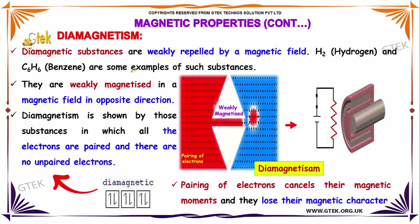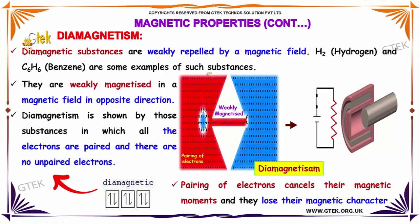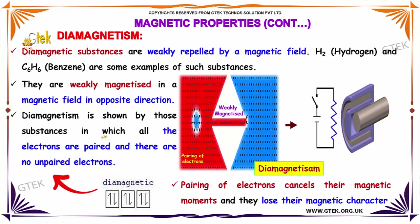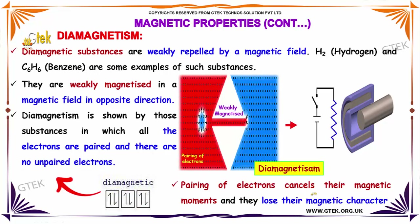Diamagnetic substances are weakly repelled by a magnetic field. Hydrogen and benzene are typical examples. They are weakly magnetized in a magnetic field in the opposite direction. Diamagnetism is shown by substances in which all the electrons are paired — they don't have any unpaired electrons. The pairing of electrons cancels their magnetic moments.